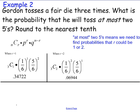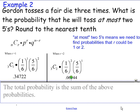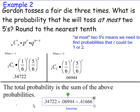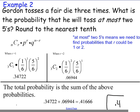So like I said earlier, the total probability is the sum of the above probabilities. So we get .41666. Round it to the nearest tenth, .4 is your answer.